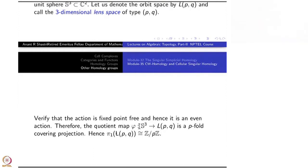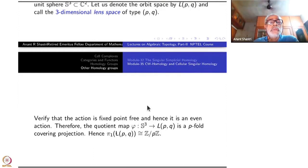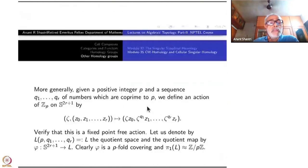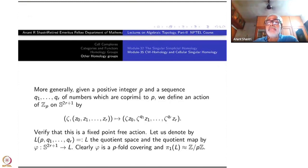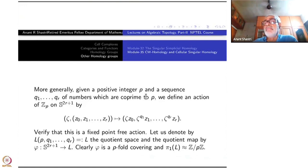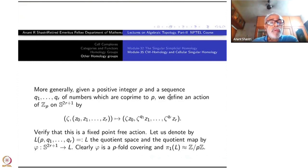These things you have seen in part 1 already. More generally, take integers P and Q₁, Q₂, ..., Q_R which are all co-prime to P. So there I had just P and Q; but now I am taking R of them — Q₁ through Q_R — all co-prime to P. Fix such an ordered tuple of numbers.